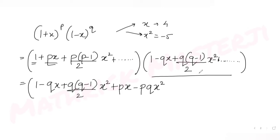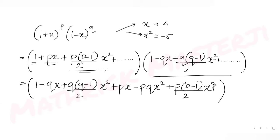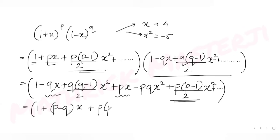Multiplying px with the second bracket gives plus px minus pq·x squared. The higher terms become x cubed and are not needed. Multiplying p(p minus 1)/2 by 1 gives plus p(p minus 1)/2 · x squared. Terms beyond x squared are discarded.